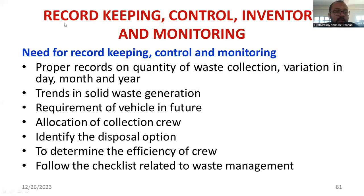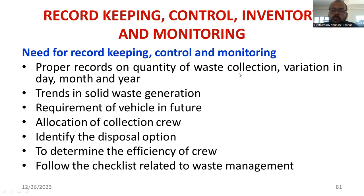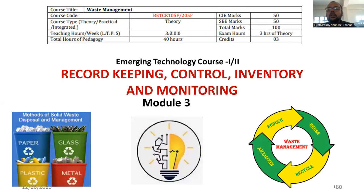That is why we require proper record keeping, proper control, proper inventory control, and monitoring — everything is required. If monitoring is not proper, things won't work out, and auditors should be in place. We need proper data for analysis. Statistical Survey of India, for example, collects data from different geographical locations and performs data analysis. You can also use software-based analysis. This is the significance of record keeping, control, inventory, and monitoring.